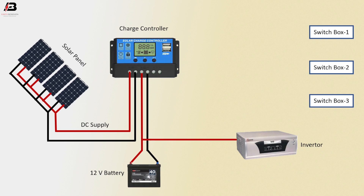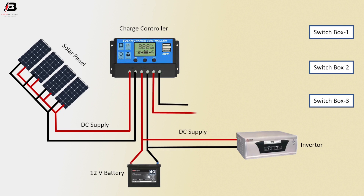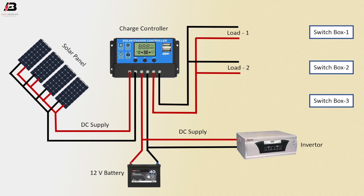Positive connection from battery to inverter. Negative connection from battery to inverter. Positive and negative connection to load 1, load 2, and load 3. This is DC supply — 12 volt DC load.